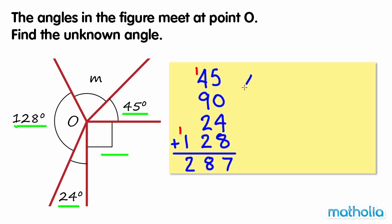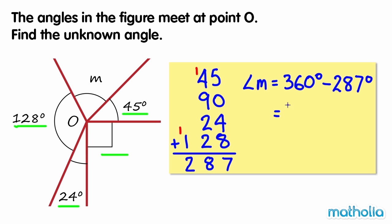Angle M equals 360 degrees minus 287 degrees, which equals 73 degrees. The unknown angle is 73 degrees.